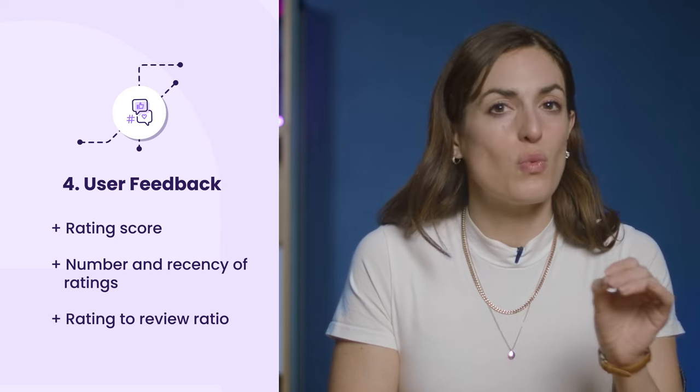The fourth metric area is user feedback. The KPIs you can track here are: number one, what's your rating score — is your app a five-star or is there room for improvement? Number two, the number and recency of ratings you have. And number three, the rating-to-review ratio. You want to be as near to one-to-one as possible, as written reviews are more persuasive than clicking stars.